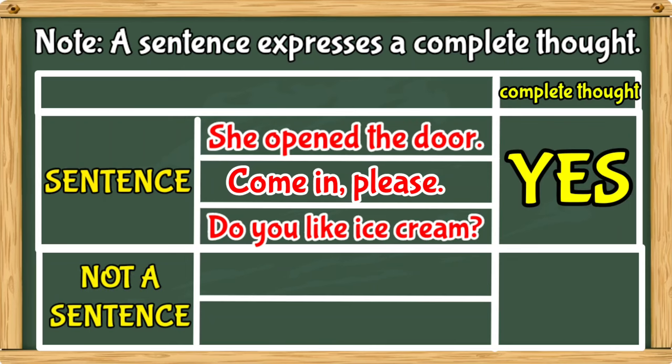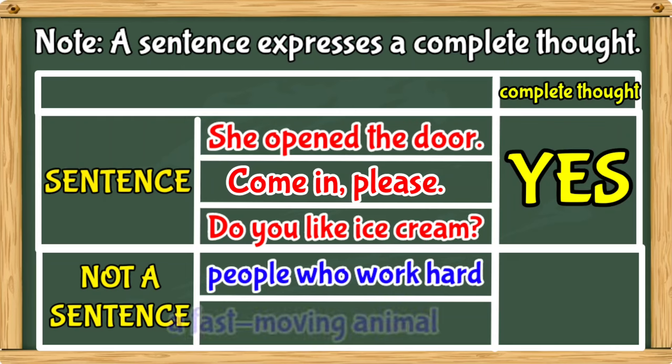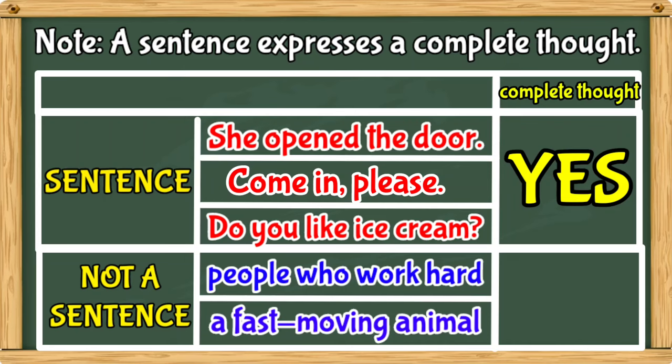Now, here are not-a-sentence examples: People who work hard. A fast-moving animal. Do these sentences express a complete thought? The answer is no.